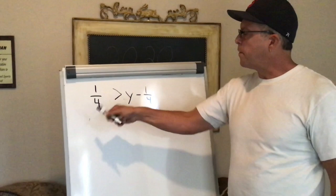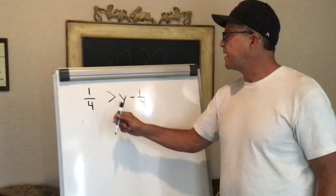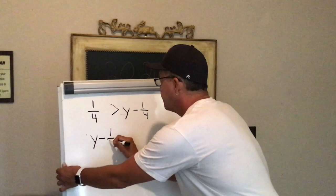When you get an inequality where the variable's on the right side, I want to read it from the variable back. So this says y minus one-fourth is less than one-fourth.